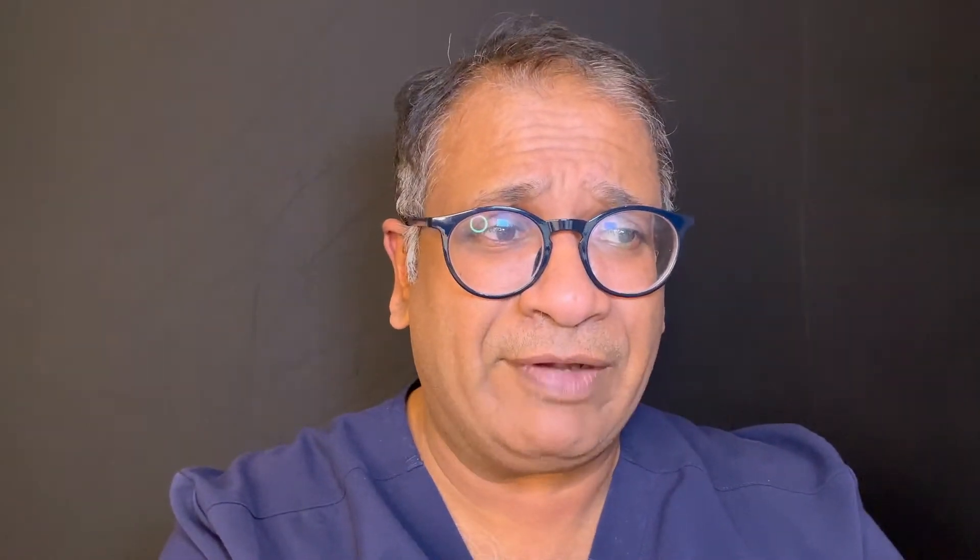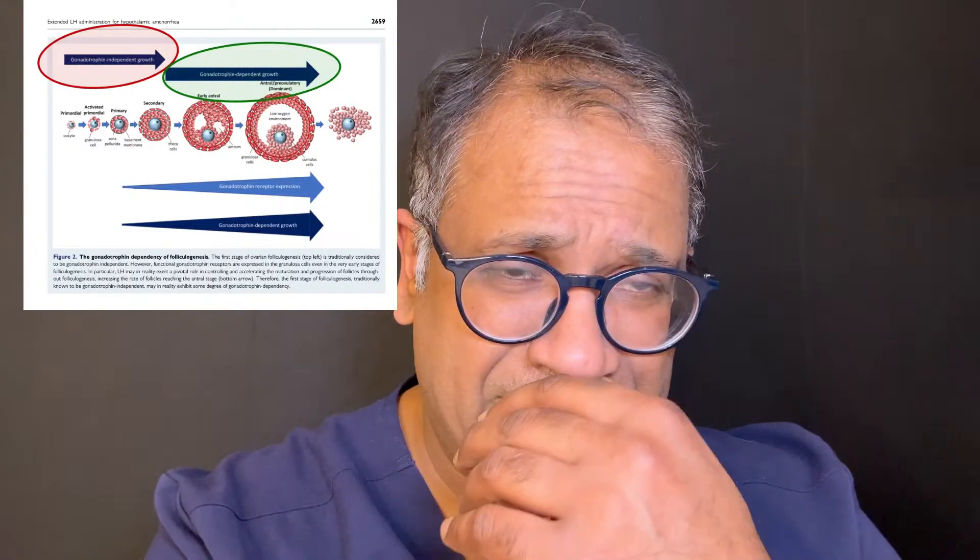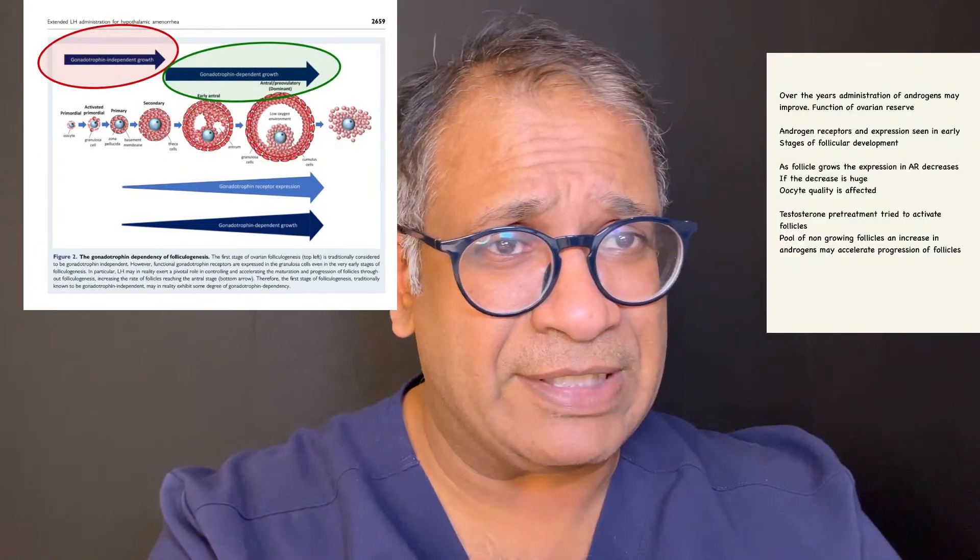Over the years, we have said let's give androgens to improve ovarian reserve. Androgen receptors are seen very early in the stage of follicular development, and as the follicle develops, expression of androgen receptors decreases. If that decrease is phenomenally low, then oocyte quality is affected. We have given testosterone pretreatment to activate follicles and start their progression, and to some extent DHEA works that way — giving androgens so that the pool of non-growing follicles starts getting activated.